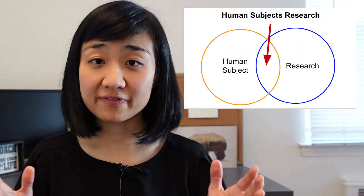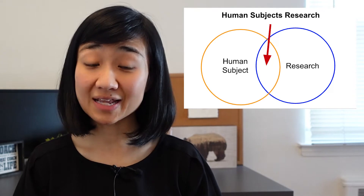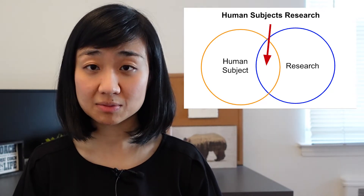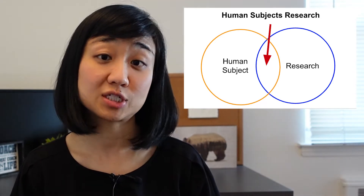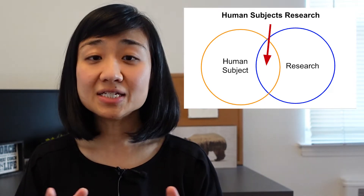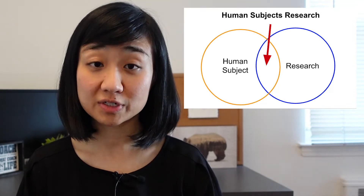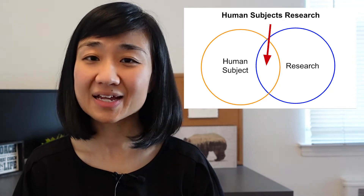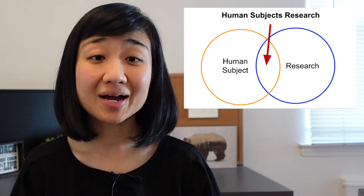What type of research projects need an IRB? Human subjects research. If you look at this Venn diagram here, this circle on the left is human subjects and on the right is research. The intersection is human subjects research, and this very sliver is where IRB is required. The goal of the IRB is to make sure that human subjects are protected within research.